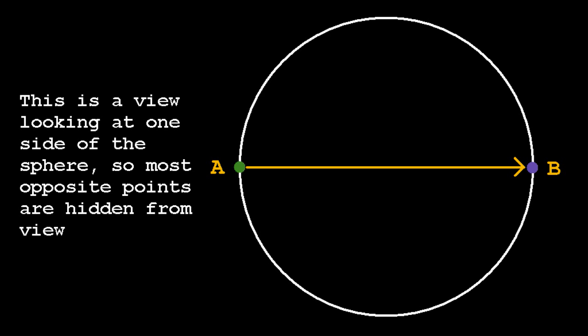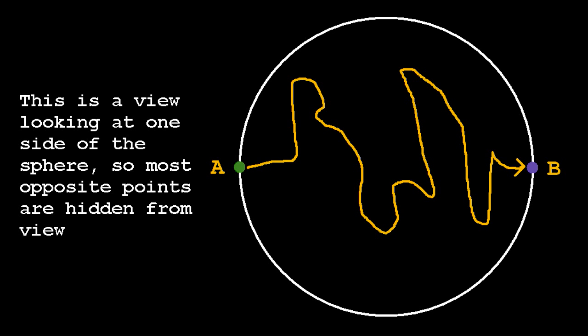The only thing special about the great circle is that it gives us an easy to visualize example of a set of connected opposite pairs on the sphere. So simply consider point A taking any path along the sphere to point B, and point B following A in the sense that it always takes the opposite point on the sphere.